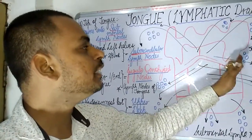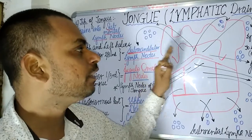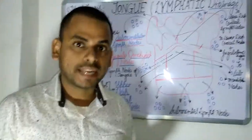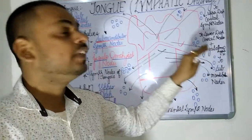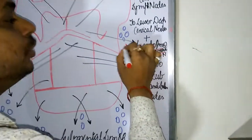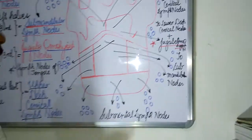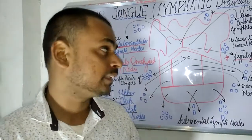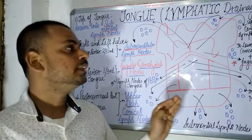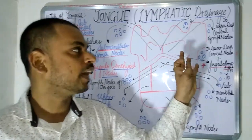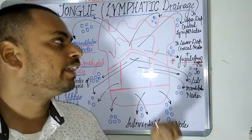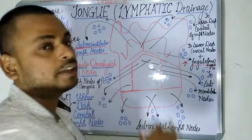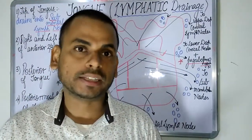The posterior one-third of the tongue drains into the lower deep cervical lymph nodes, located deep in the neck region. Particularly important here are the jugular omohyoid lymph nodes, which are commonly called the lymph nodes of the tongue. The posterior-most part of the tongue drains into the upper deep cervical lymph nodes.